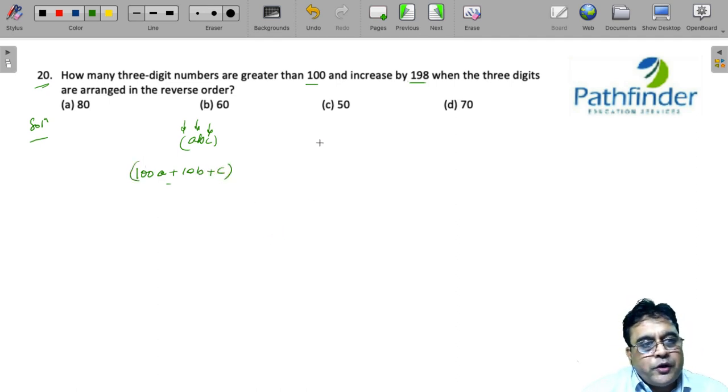So when you reverse the digits, the value of the same number will become 100c, because c will now become the hundreds place, plus 10b plus a. And the difference between these two numbers, what is the difference?